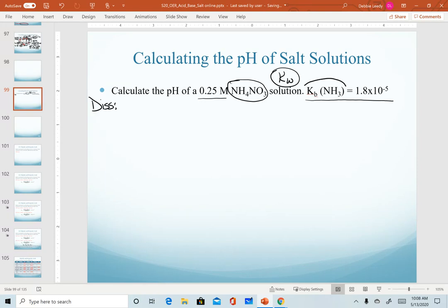We start by writing our dissociation equation, NH4NO3. We're only working with soluble salts here in this chapter. Ammonium is our cation, nitrate is our anion.